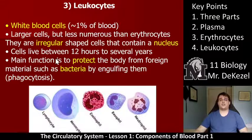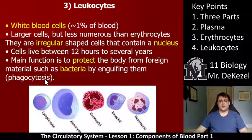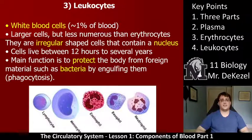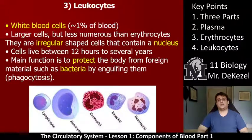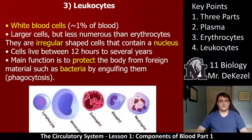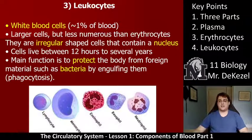Their main function is to protect the body from foreign material like bacteria or viruses by engulfing them through phagocytosis. Phagocytosis is essentially wrapping around the invader, eating it, and then dissolving it — a process that can often kill the white blood cell. The dead cells are then cleared by your kidneys, liver, or spleen. When there are a lot of white blood cells, it kind of signals that something is not quite right with your body.